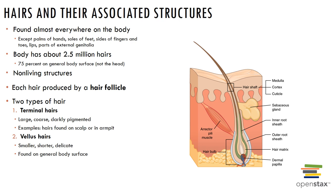Each hair is produced by a hair follicle that extends from the epidermal surface into the dermis. Hair contains a medulla, cortex, and cuticle. The shaft is three layers above the surface of the skin, the root is three layers below the surface, and the follicle is an invagination of the basal epidermis. The bulb is the deepest end of the follicle, where mitosis occurs — cells are pushed up, keratinized, and produce our genetically determined hair color.